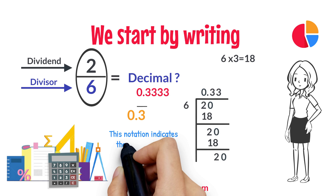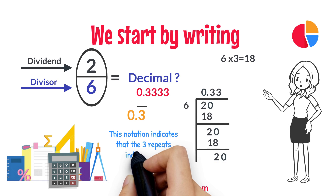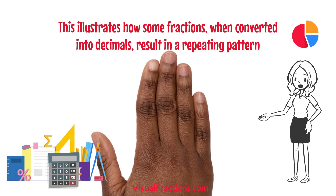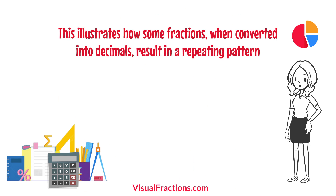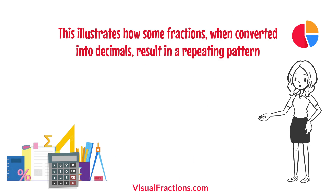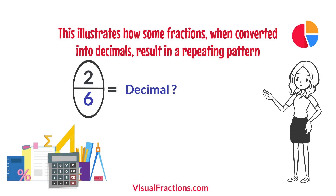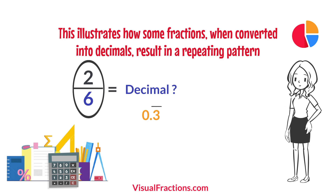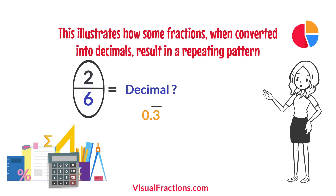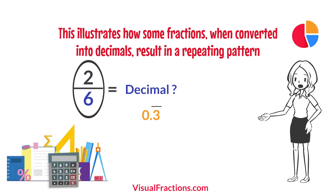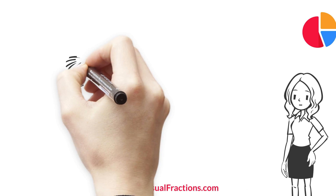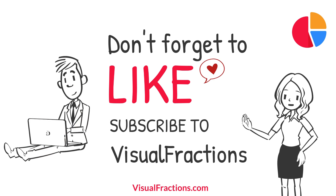This notation indicates that the 3 repeats indefinitely. This illustrates how some fractions, when converted into decimals, result in a repeating pattern. So, there we have it — the fraction 2 sixths converted to a decimal is 0.3 with a bar on top of 3. This simple conversion process helps us understand and represent fractions in decimal form.